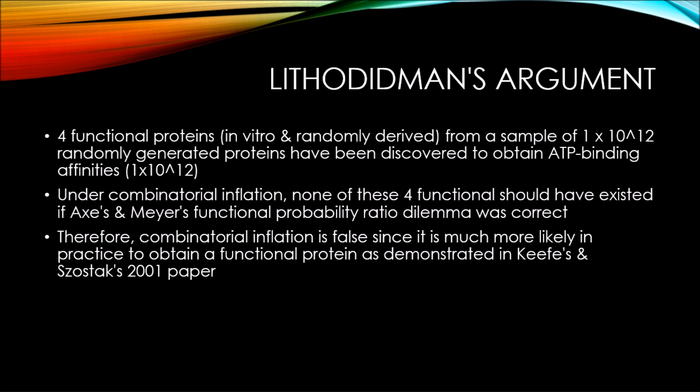Therefore, the 1 in 10 to the 11th probability of finding a functional protein is very limited and based on an unreliable sample population where neither frameshift mutations nor stop codons occur. Given this limitation, Lithodidman has misinterpreted Keefe and Szostak's conclusion. His probability argument does not work given that it deliberately ignores frameshift mutations and stop codons, unlike DNA mutations that occur in nature — rendering the probability even more unlikely than what the paper implies.